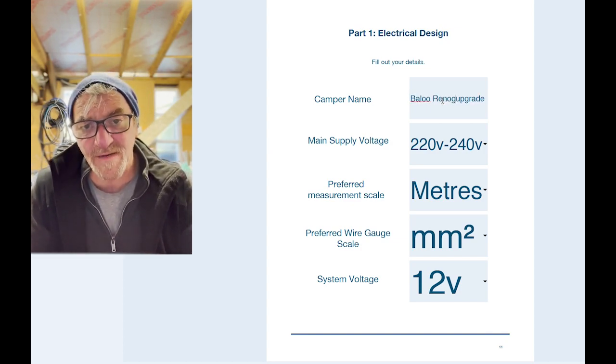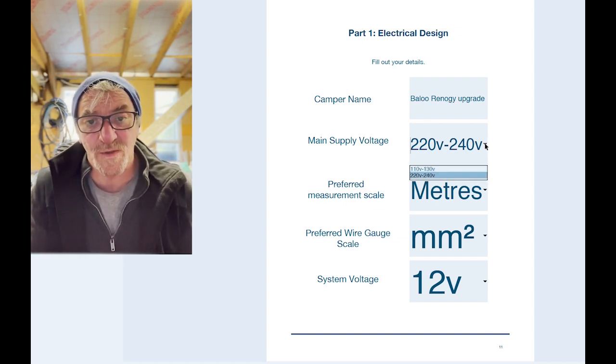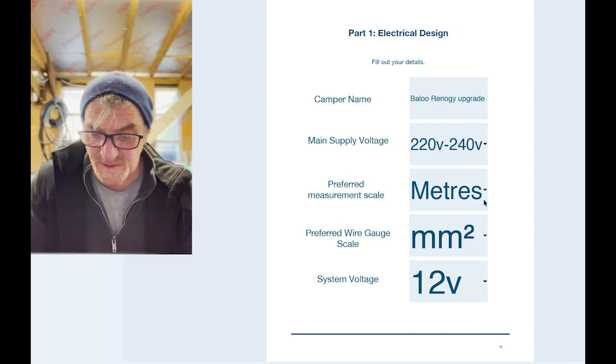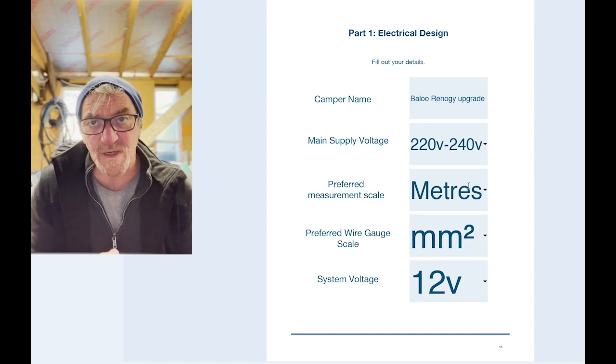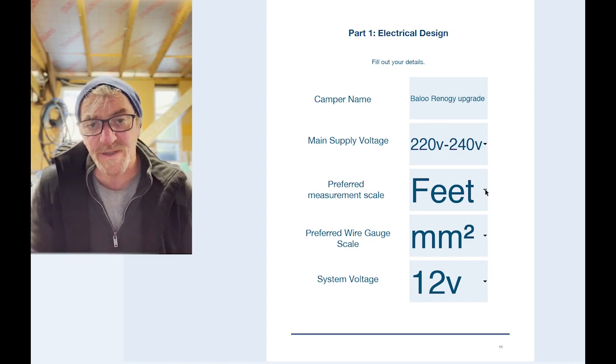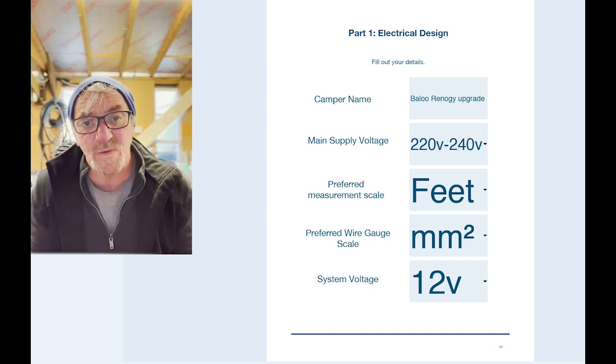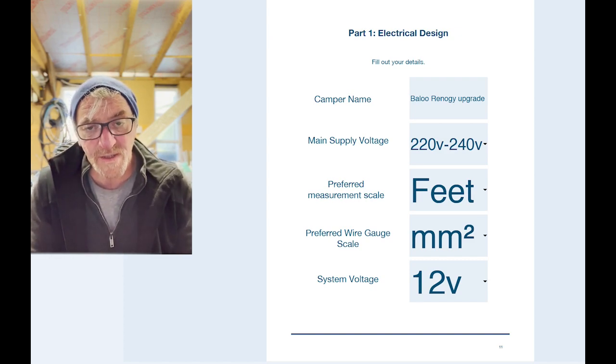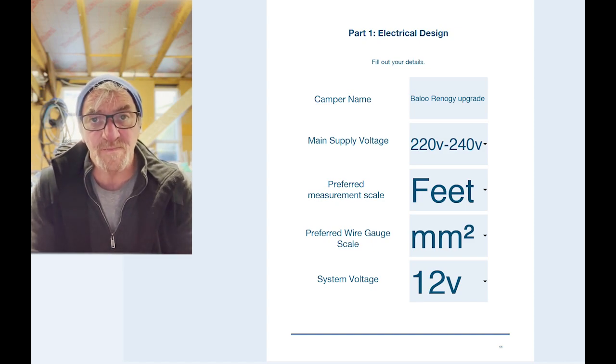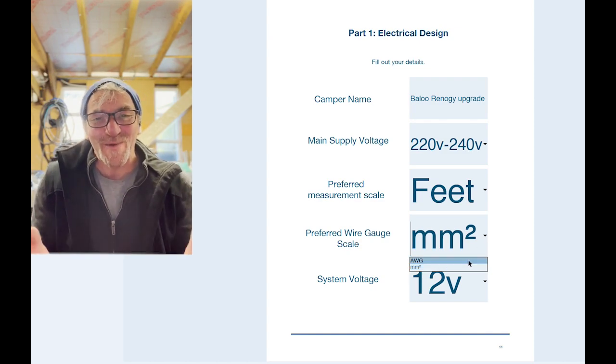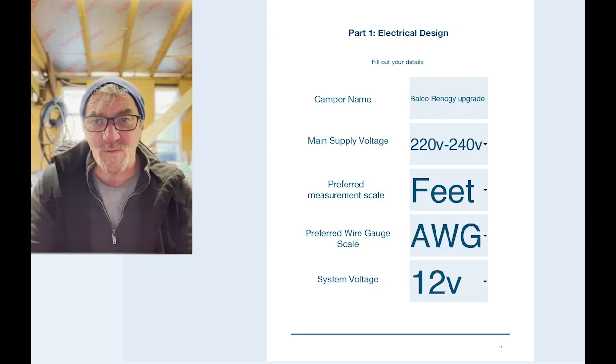My main supply voltage is 220 to 240, but you have the option here to choose 110 to 132, so depending where you're in the world and depending on what you want as your base voltage you can select that. The next piece is around our preferred measurement scales, and here you can see meters but you can choose feet. This is all around trying to work out the correct wire size for the appliances and the services that you're going to install. By using feet or meters, whichever you prefer to measure in, we can work out the wire size both in terms of a safety factor and also in terms of an efficiency factor. We also can choose the wire scales, so in Europe we are going to use the millimeter squared, but in North America or other parts of the world we can use AWG or the American wire gauge.